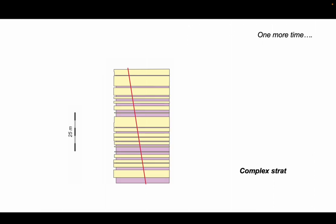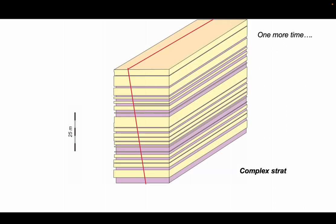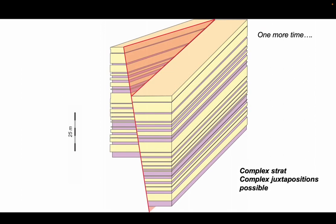Let's do it again with a more complicated stratigraphy. Again, that's the 2D view. That's the three-dimensional view. And again, we'll have a tip line at the far end of our diagram and increasing throw towards us. So there's the throw. And because our stratigraphy is quite complicated and it's got lots of sandstone beds, we'll generate a complex set of possible juxtapositions.